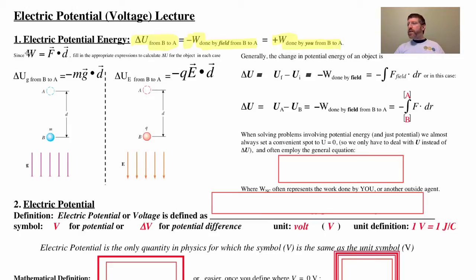So since work is F dot D, it's a dot product there, let's fill in the appropriate expressions to calculate delta U for these two situations. So you notice what we're doing is just comparing gravitational potential energy to electric potential energy. So what we have right here is we've got a G field pointing down. What we're doing is if we lift this ball of mass M up distance D in a gravitational field G, well, how much change in gravitational potential energy is there as we lift this from point B right there to point